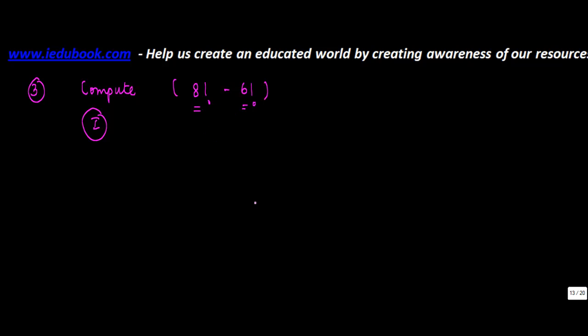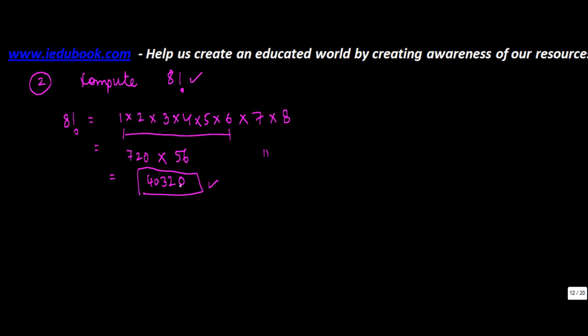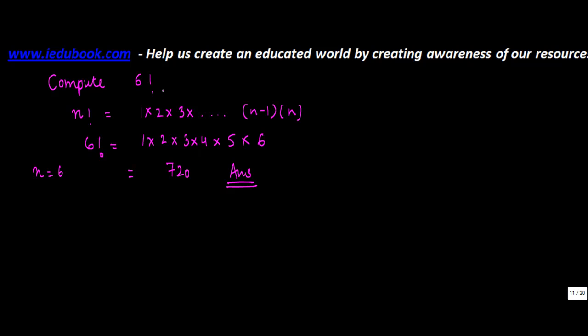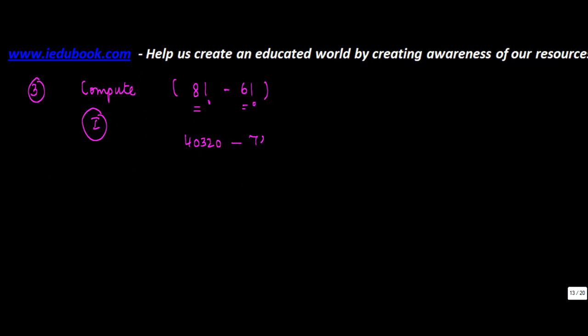The values were: factorial 8 was 40320, minus factorial 6 which is 720. So you get the value as 39600.